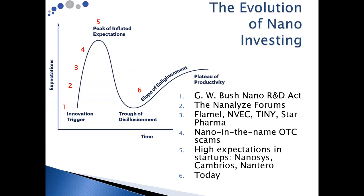The evolution of nano investing: it all started in 2003 when George W. Bush signed the Nanotechnology Research and Development Act, and suddenly everybody on Wall Street was interested in nanotechnology. Back then, the so-called nanostoxx were names like Flamel and Star Pharma doing nanodrug delivery, NVEC doing NRAM using nanotubes to create superior RAM, and Harris and Harris Group — ticker Tiny — a publicly traded venture capital firm investing in rising stars like Nanosys and Cambrios.